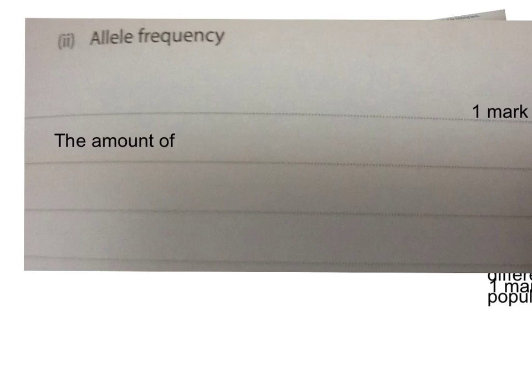Amir starts: the amount of an allele. Can we add to that? Can we add any more detail for the mark? Part of the way there — what else would you say? Ryan suggests: the number of times an allele appears within a specific population. Yes, so we could say the frequency or amount of times an allele appears.